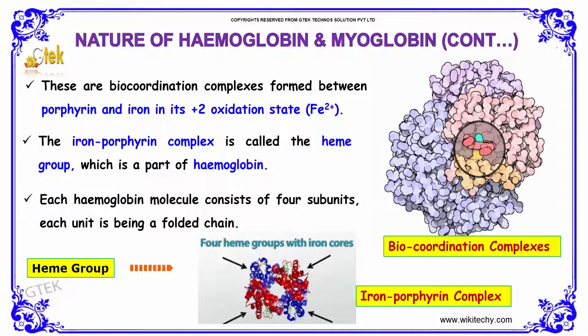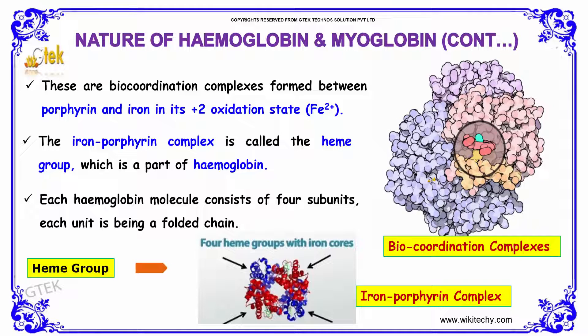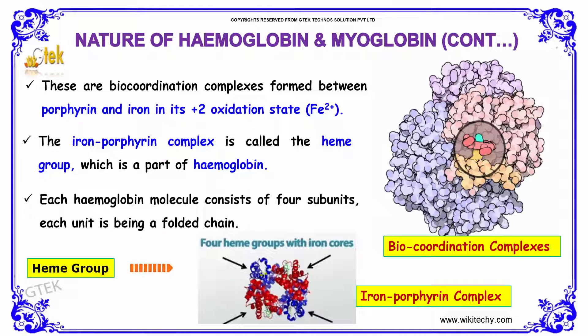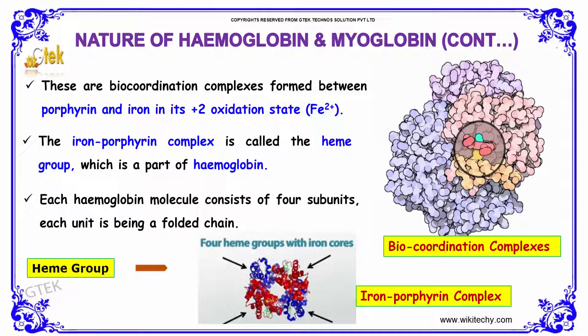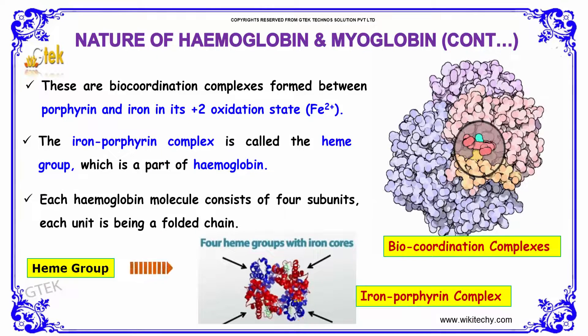Each hemoglobin molecule consists of 4 subunits, each unit being a folded chain — 1, 2, 3, and 4.